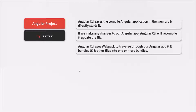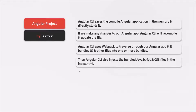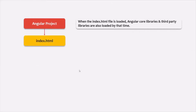Basically, in an Angular application, Webpack traverses through our application looking for JavaScript and other files, then merges them all into one or more bundles. In our example application, it has created five bundle files. Once the Angular CLI has these bundled files, it injects the bundled JavaScript and CSS files into index.html. By the time index.html is loaded in the browser, the Angular core libraries and third-party libraries are already loaded, because they have been bundled and injected.